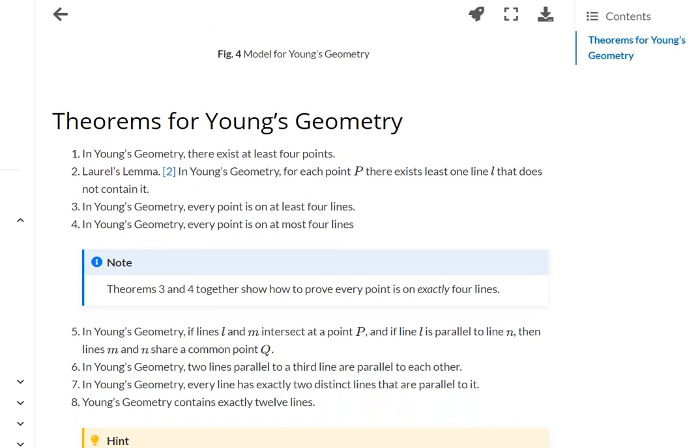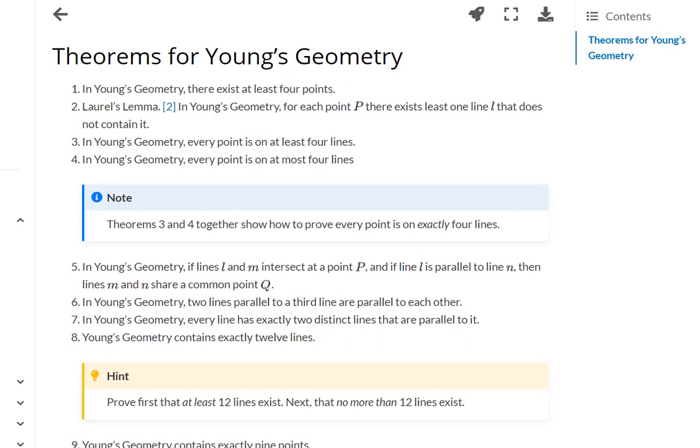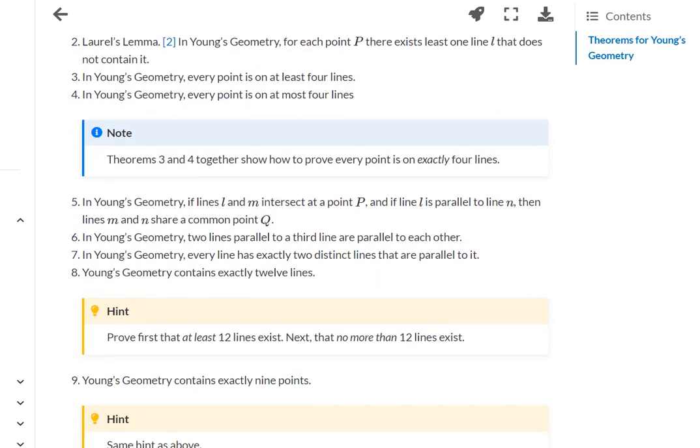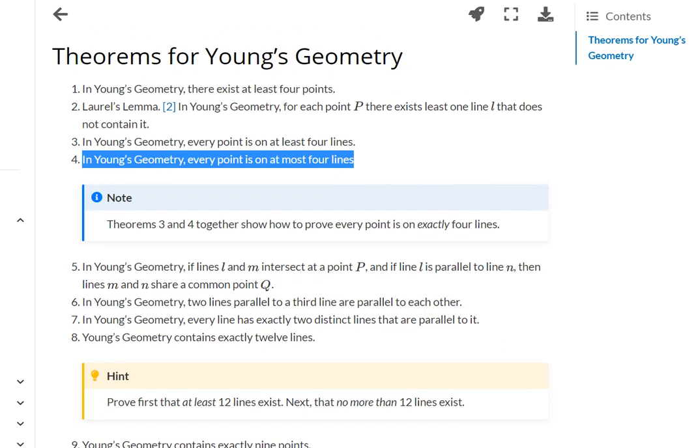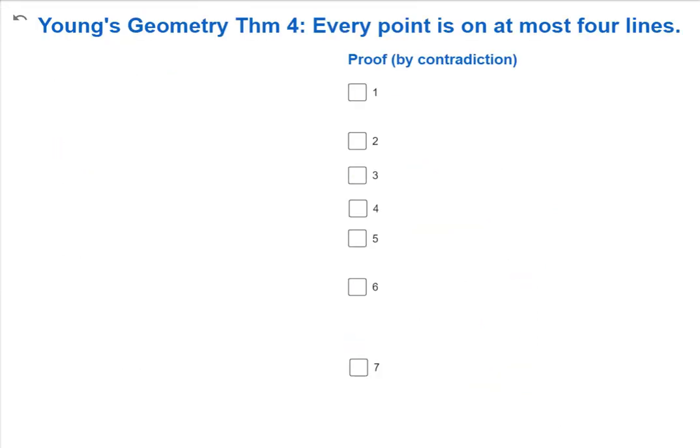The problem is that the fact that there are exactly nine points, that's theorem nine. So I can't use theorem nine. It's true, and I can use the model to try to figure out what's going on here, but I need to proceed without it.